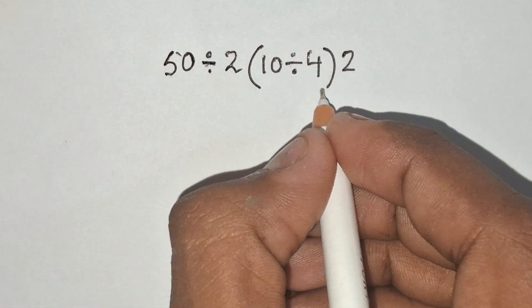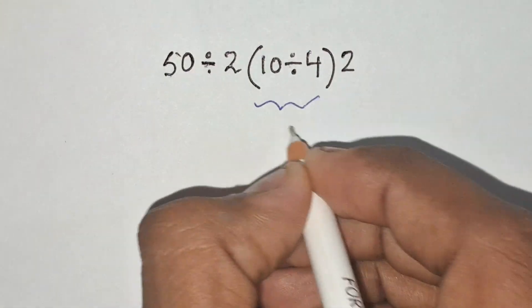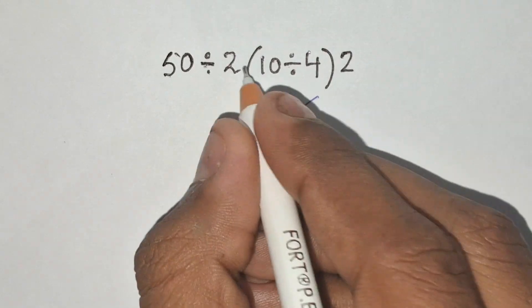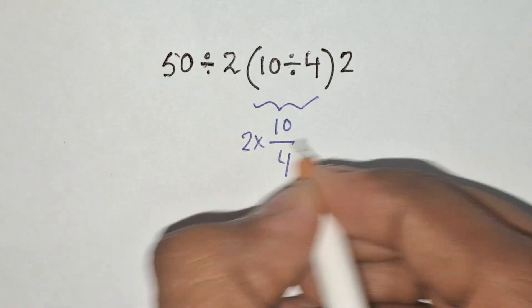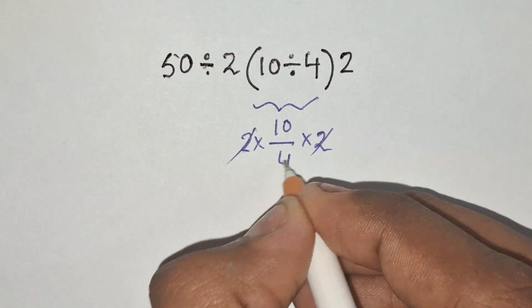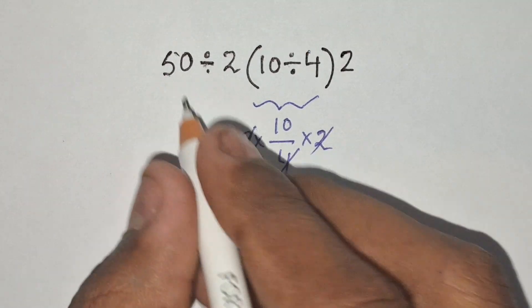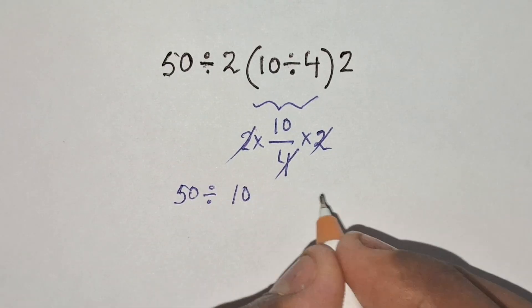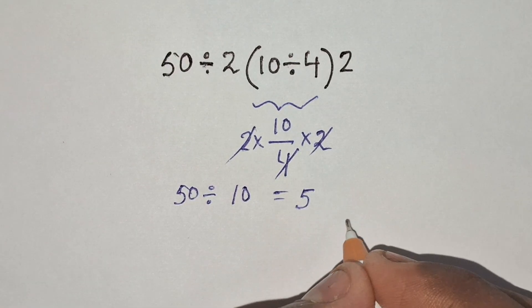10 divided by 4 is equals to 10 by 4 and it is multiplied by 2 and another 2. So 2 and 4 cancels, the expression now becomes 50 divided by 10 is equals to 5, but it's not the correct answer for the expression.